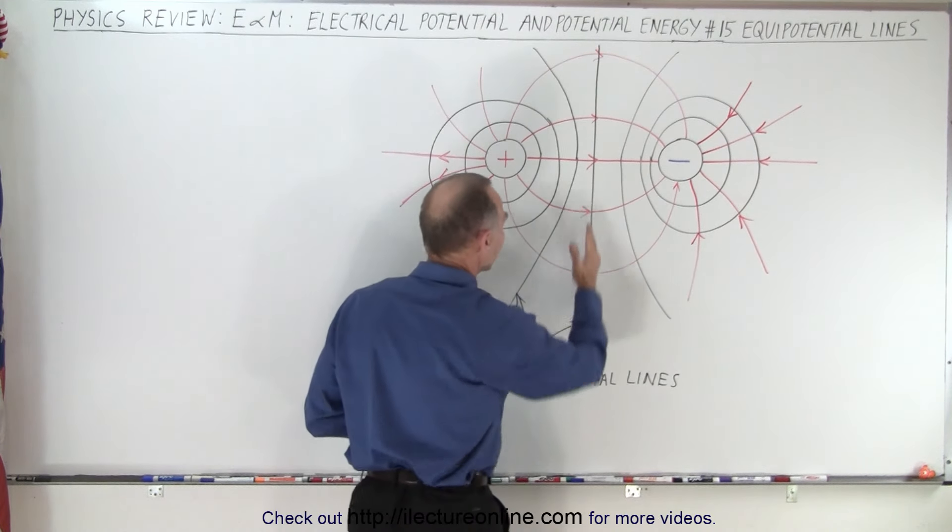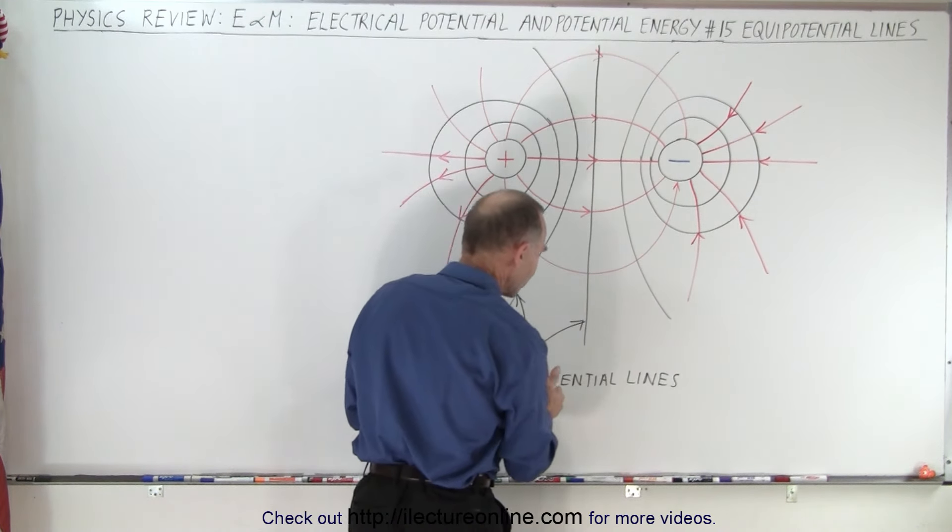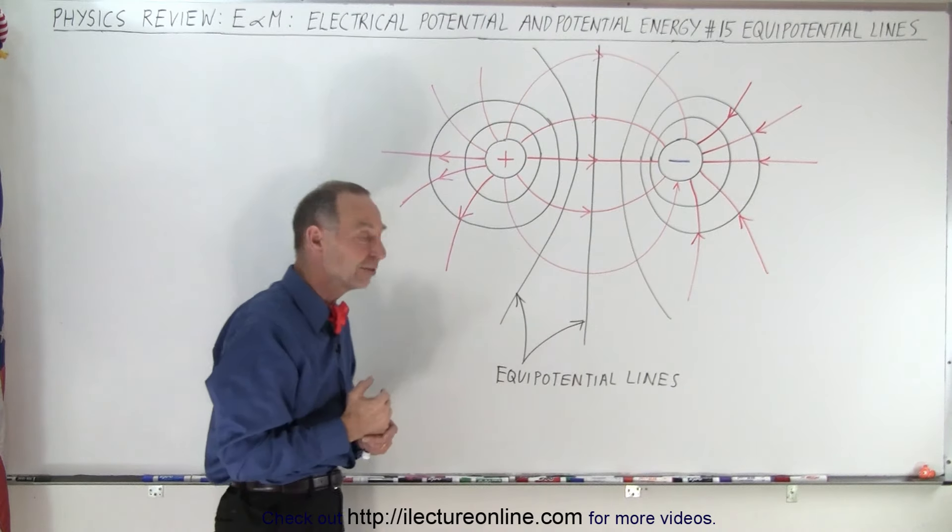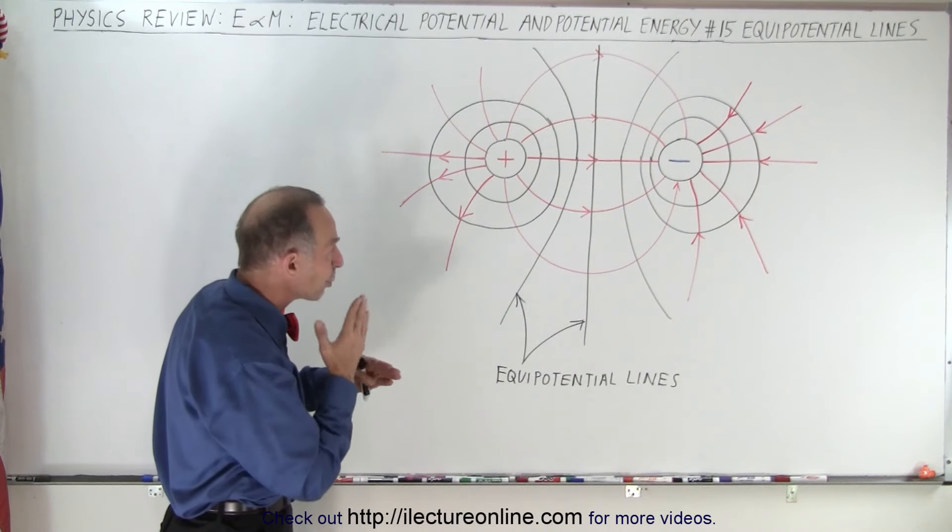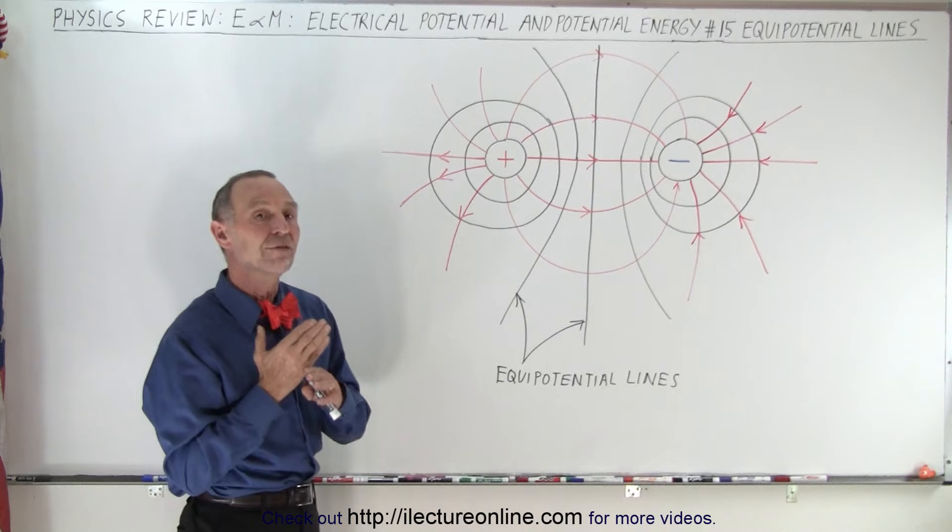Notice how the black lines, which are representative of the equipotential lines, are always going to be perpendicular to the electric field lines.